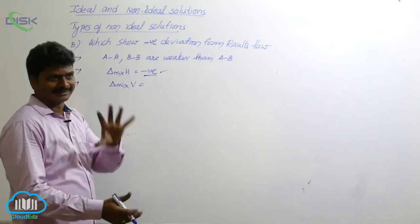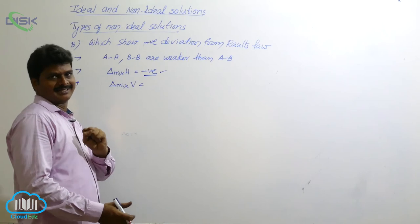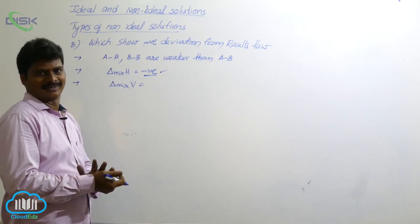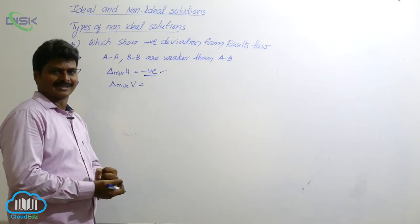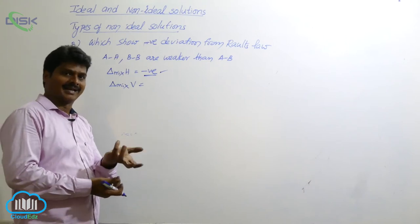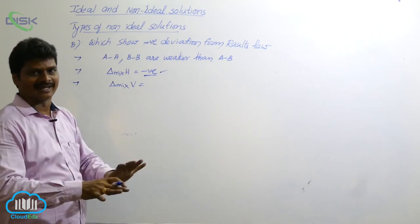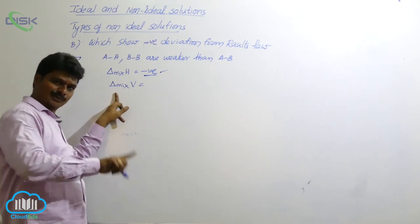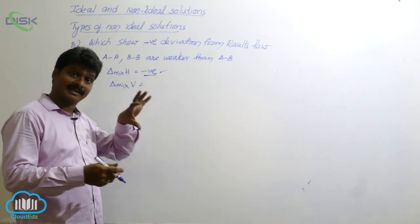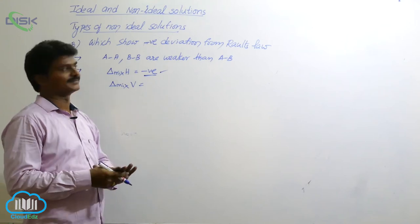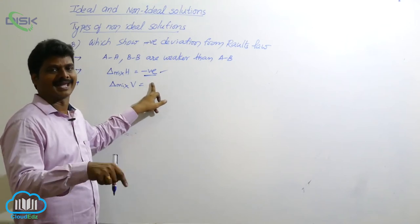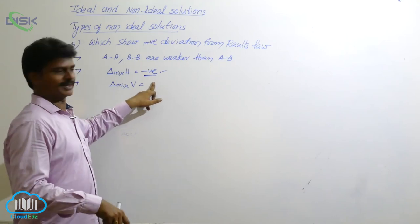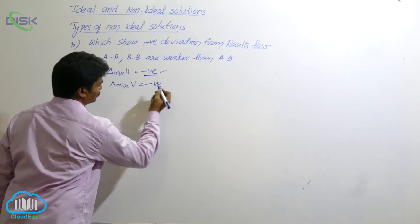Because strong bonds form, as a result molecules are held tightly by solute and solvent molecules. Solute molecules are held tightly by solvent, and solvent molecules are held tightly by solute. So in that way, there is a decrease in volume. That means if you mix 5 liters of solute and 5 liters of solvent, the resulting solution volume is less than 10 — maybe 9.9 or 9.95. So here, volume of mixing is also negative.